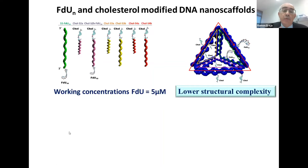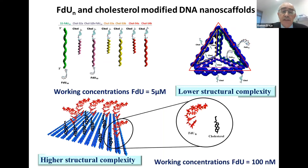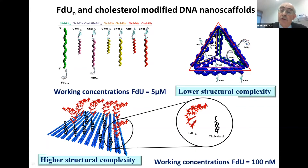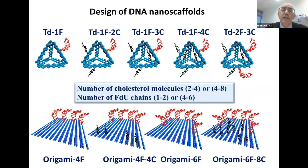The working concentration is about 5 micromolar. The second structure is a DNA origami, which is bigger — about 100 nanometers — allowing us to introduce many more oligonucleotides and much more cholesterol. These are the molecules we made, increasing the number of floxuridines and the number of cholesterol molecules.